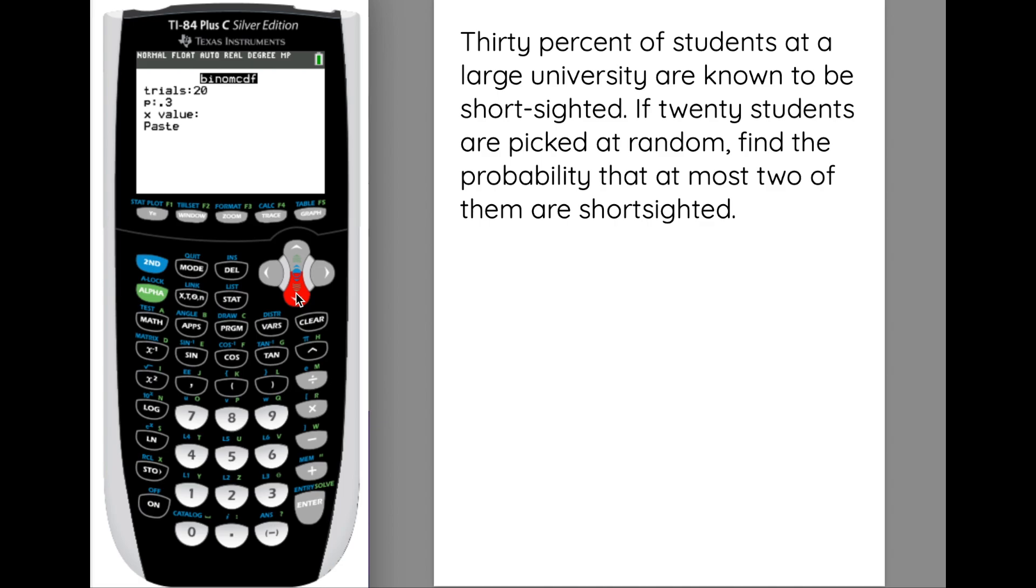So it says at most two students. So that would include two, one, and zero. So for the CDF function, if I put the number two in here, that's going to add the probability of two, one, or zero students, which is what the question is asking us.